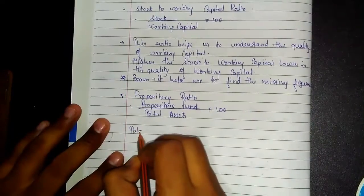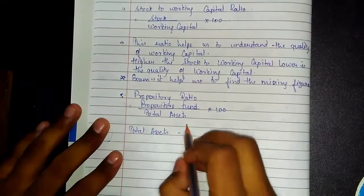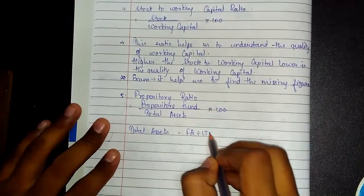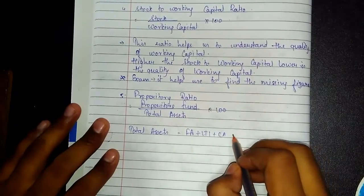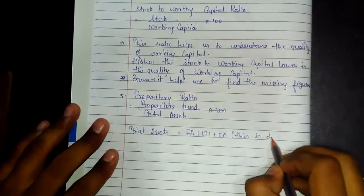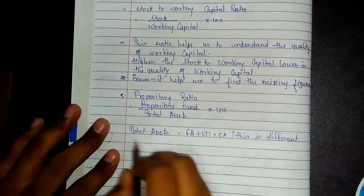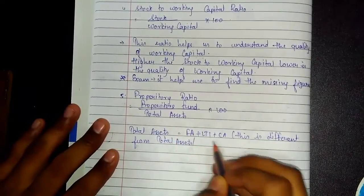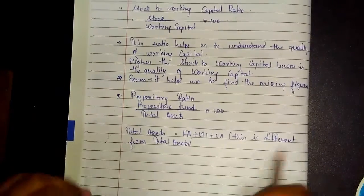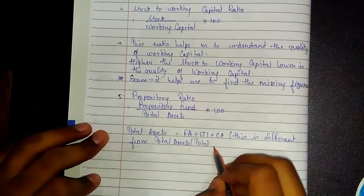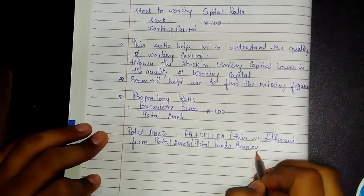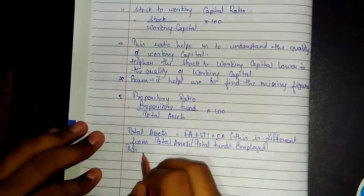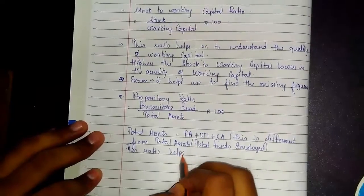Total Assets = Fixed Assets (FA) + Long-term Investments + Current Assets. This is different from Total Assets / Total Funds Employed — these are two distinct terms and should not be confused with each other.